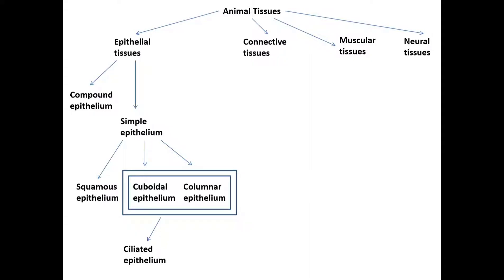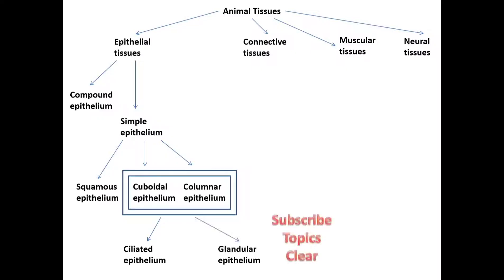In some tissues, there are glands — glands which secrete something. For example, sweat glands secrete sweat, and oil glands secrete oil. All tissues where glands are present, we call it Glandular epithelium. So this is the basic classification of epithelial tissues.